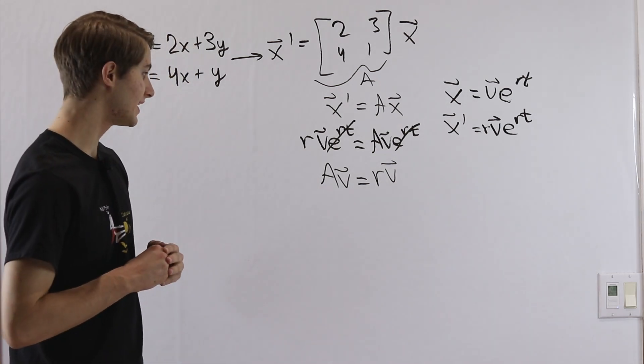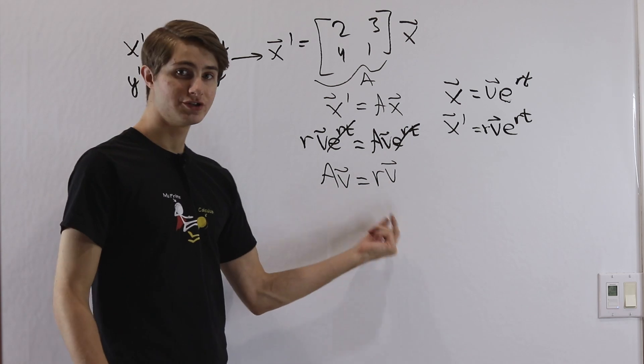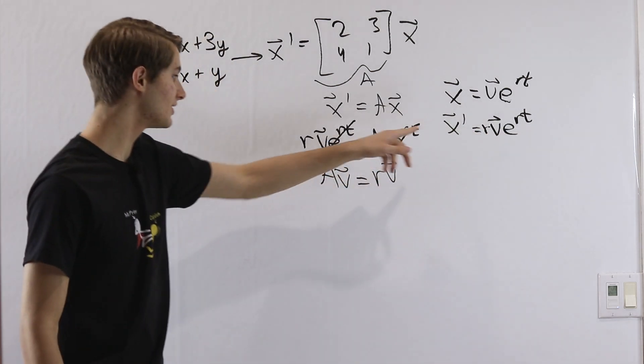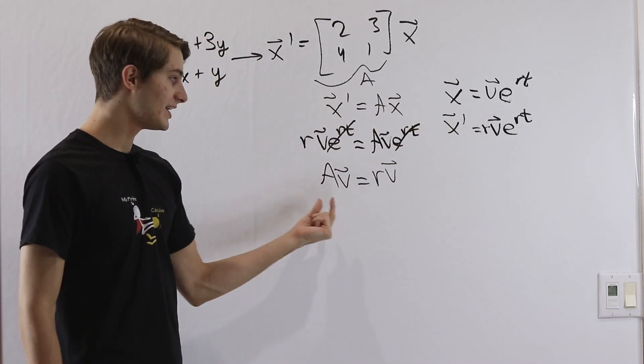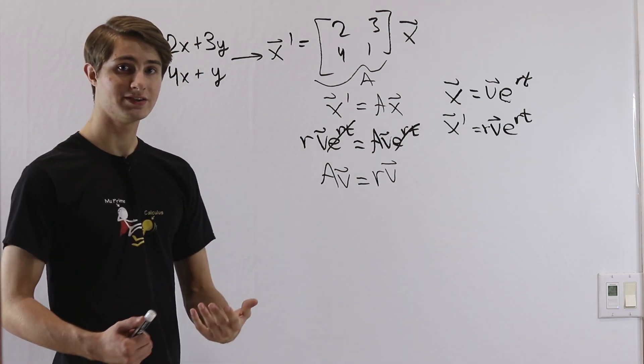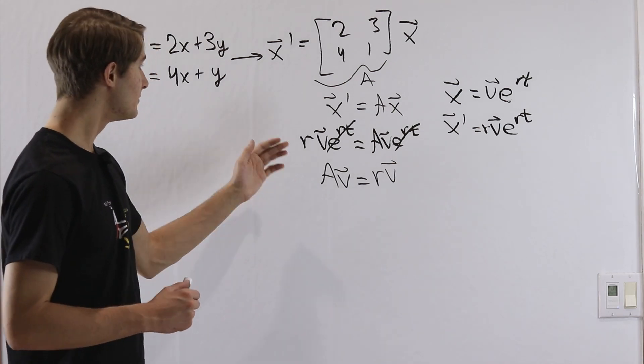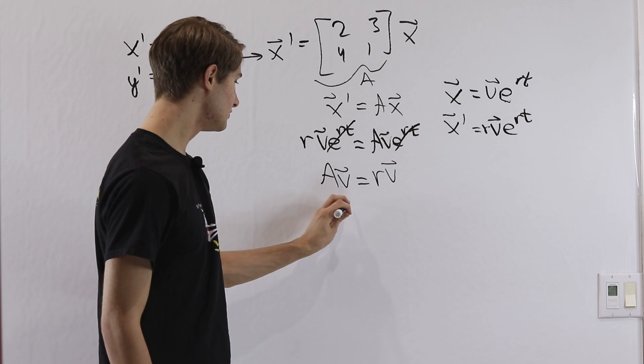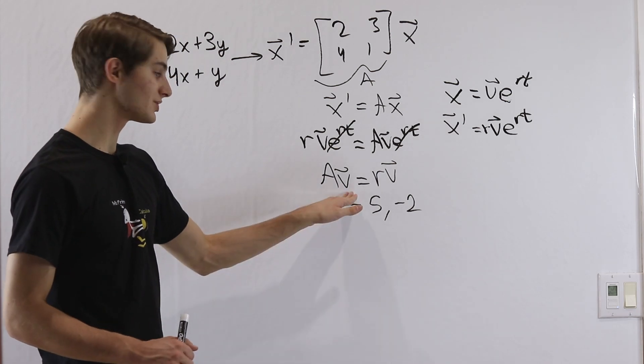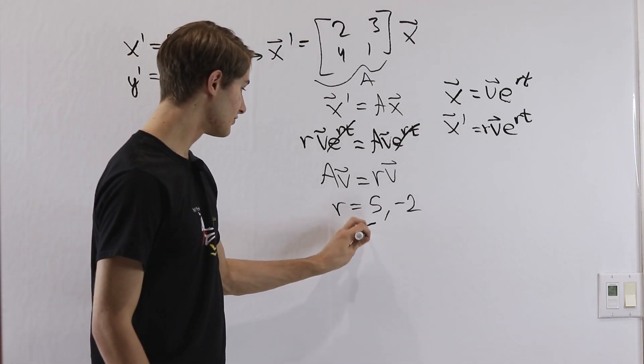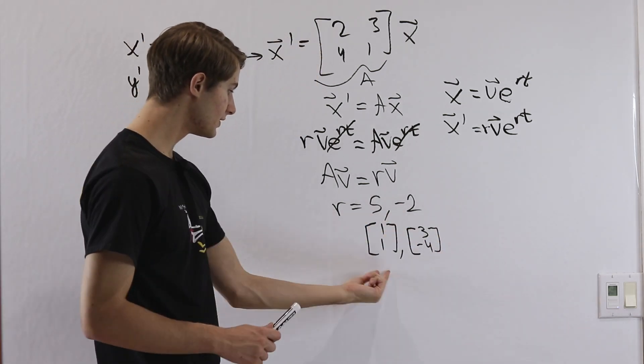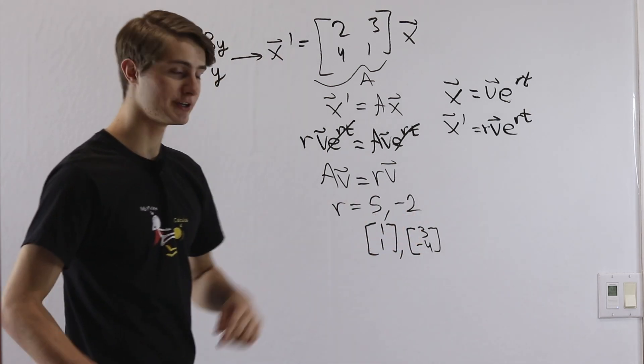Again, you can check the video in the description for that. Normally we would write av equals lambda v, but r is just a number like lambda. We're going to go through the same process. If we want to find the numbers r that satisfy this equation, all we have to do is find the eigenvalues of our matrix A. So this is a differential equations class, so I'm not going to go through how to find the eigenvalues. You can check the other video for that. But if we find the eigenvalues of this matrix, they're going to be equal to 5 and negative 2. And once we have the eigenvalues, then we go through and solve for the eigenvectors. The answers that we get for those are 1, 1 and 3, negative 4. So 1, 1 goes with this eigenvalue of 5, 3, negative 4 goes with this eigenvalue of negative 2. This is actually all the information that we need to solve for our original function x.